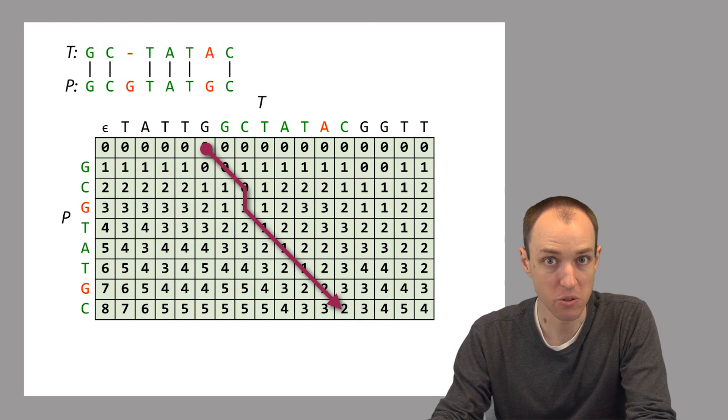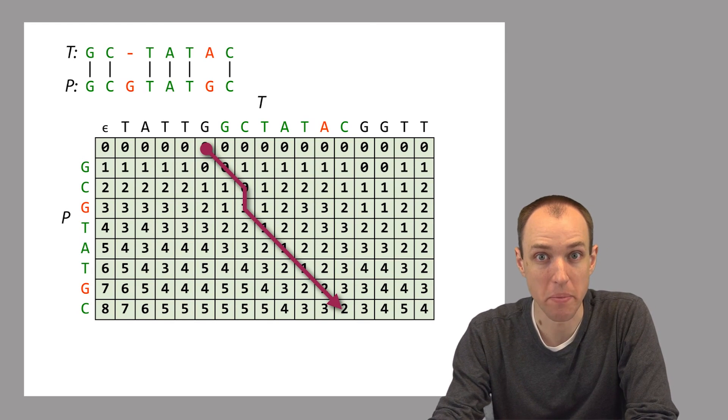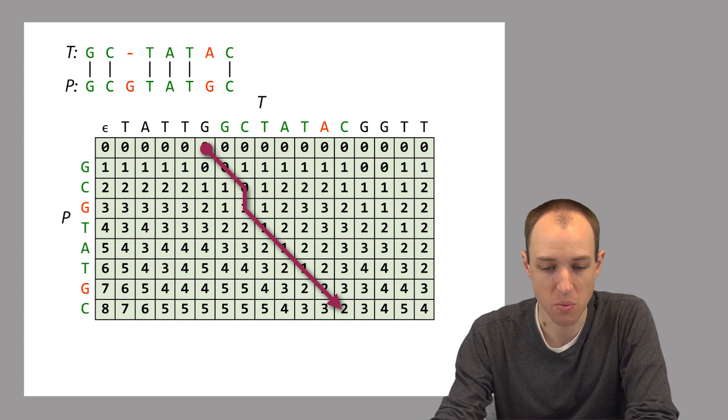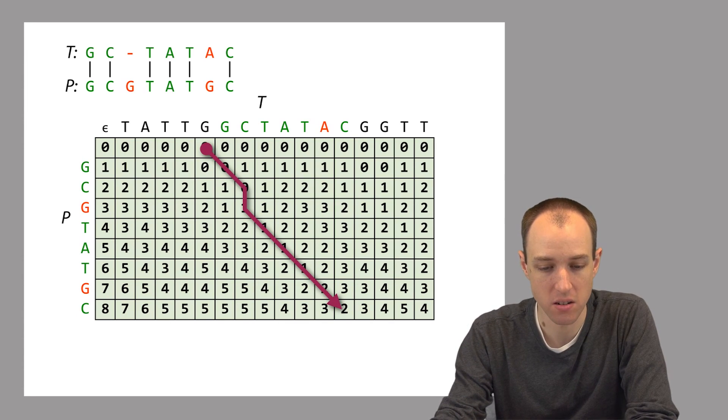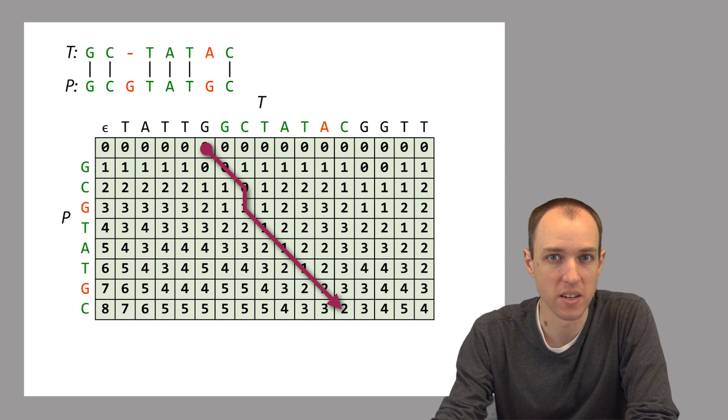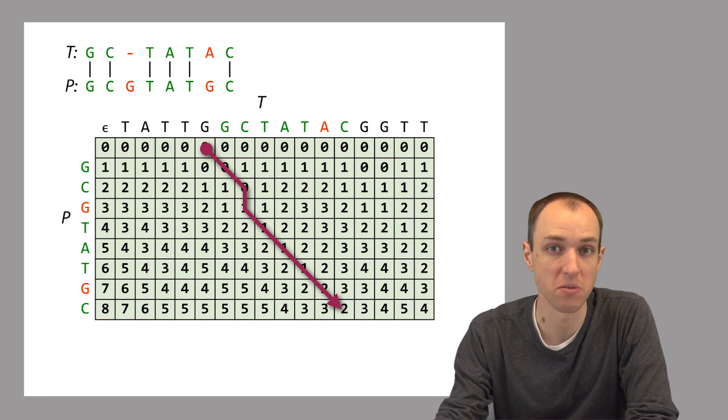This is how we use edit distance to solve the approximate matching problem. We fill in a matrix like this and we can look in the final row to detect occurrences of P and T with some number of edits. Then we can use the traceback to identify the exact location where that match occurs and what the shape of the alignment is.